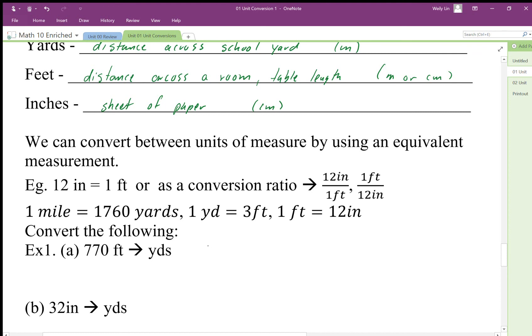In this case here, if I have 770 feet, I can use a proportion, but we want to try to use this multiplying strategy or unit analysis, also called dimensional analysis.